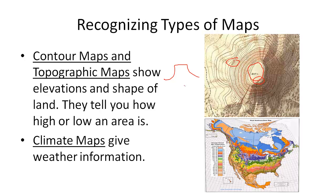Climate maps are maps you see when you watch the weather on the news or when you look up the weather in the newspaper. Climate maps can give us all sorts of weather information, anything from just what temperature it's going to be outside to the average rainfall of an area.